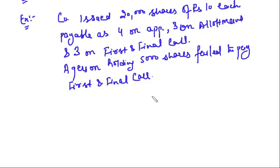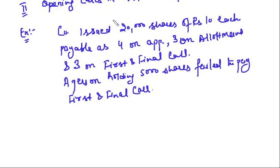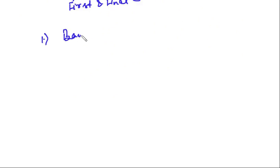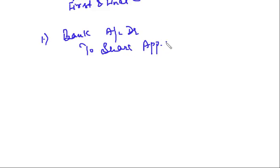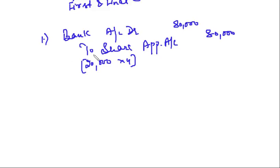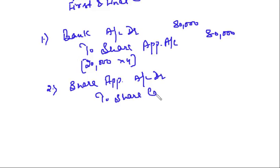The first journal entry: you receive applications along with application money on 20,000 shares at ₹4 per share. Entry: Bank Account Dr. to Share Application Account — ₹80,000. Then at the time of allotment you allotted 20,000 shares, so you transfer the application money to share capital. Entry: Share Application Account Dr. to Share Capital Account.